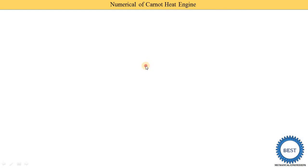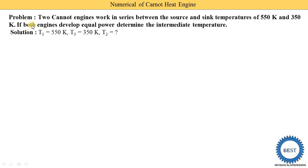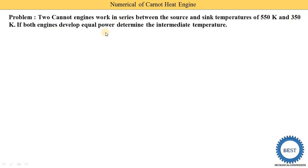First we understand the problem statement. Two Carnot engines work in series between the source and sink. The source temperature is 550K and the sink temperature is 350K. If both engines develop equal power — meaning the work done by both engines is the same — we need to determine the intermediate temperature.